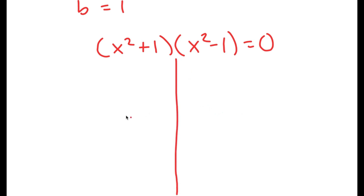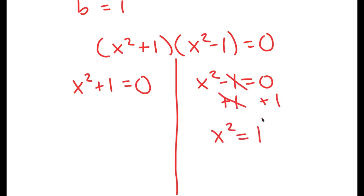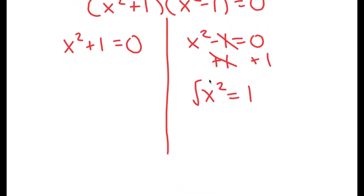So I get x squared plus 1 times x squared minus 1 is equal to 0. This gives me two equations: x squared plus 1 equals 0 and x squared minus 1 equals 0. Let's first solve x squared minus 1 equals 0. To solve this, I'm going to add 1 on both sides, so I get x squared is equal to 1. Taking the square root on both sides gives x equals positive or negative 1.